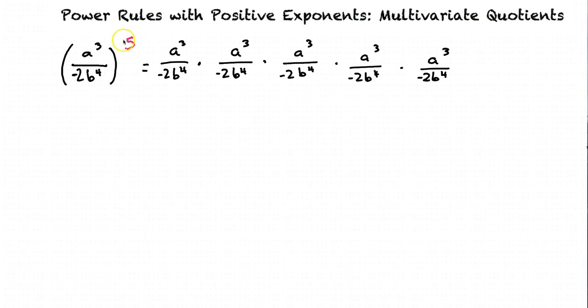In this case, we will use the power rule. We'll have a cubed raised to the 5th power. We'll have negative 2 raised to the 5th power, b to the 4th raised to the 5th power,